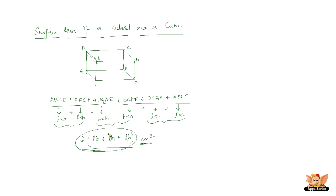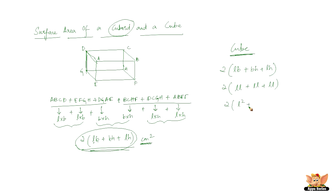So this is the total surface area of a cuboid: 2 times (length × breadth + breadth × height + length × height). Now for a cube, length equals breadth equals height, so we replace everything with L. We get 2(L² + L² + L²) = 2 × 3L² = 6L². So the surface area of a cube is 6L², and the surface area of a cuboid is 2(lb + bh + lh). We are now done with surface area of a cuboid and cube.